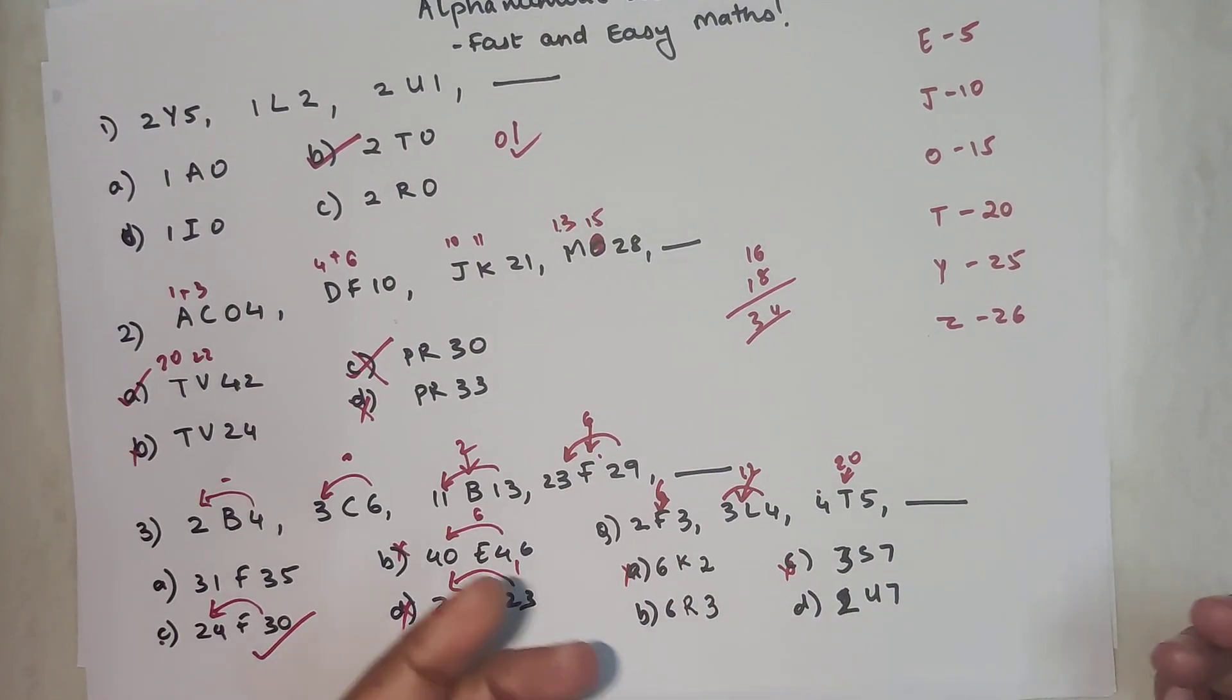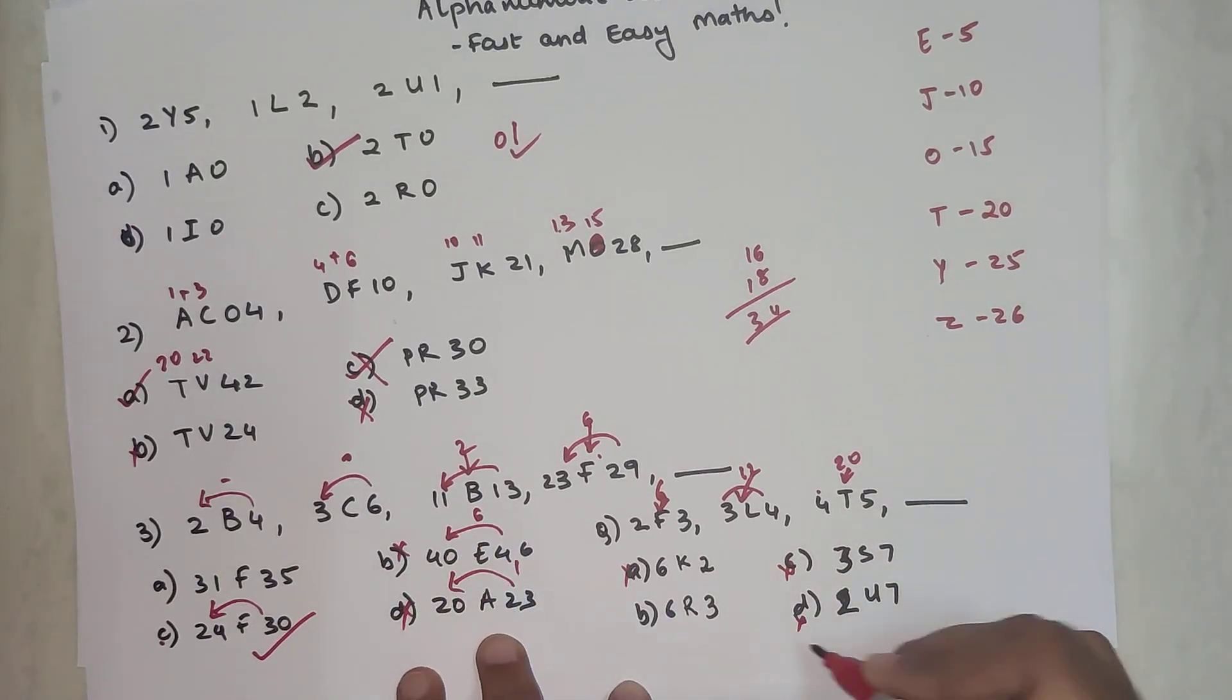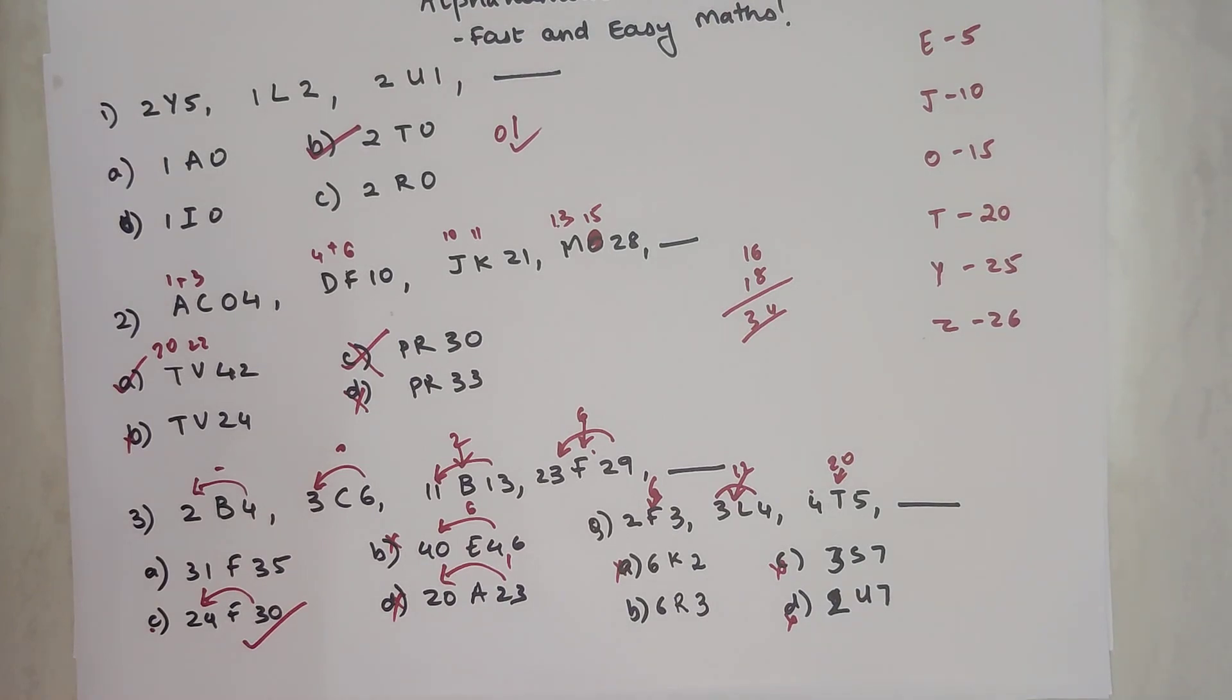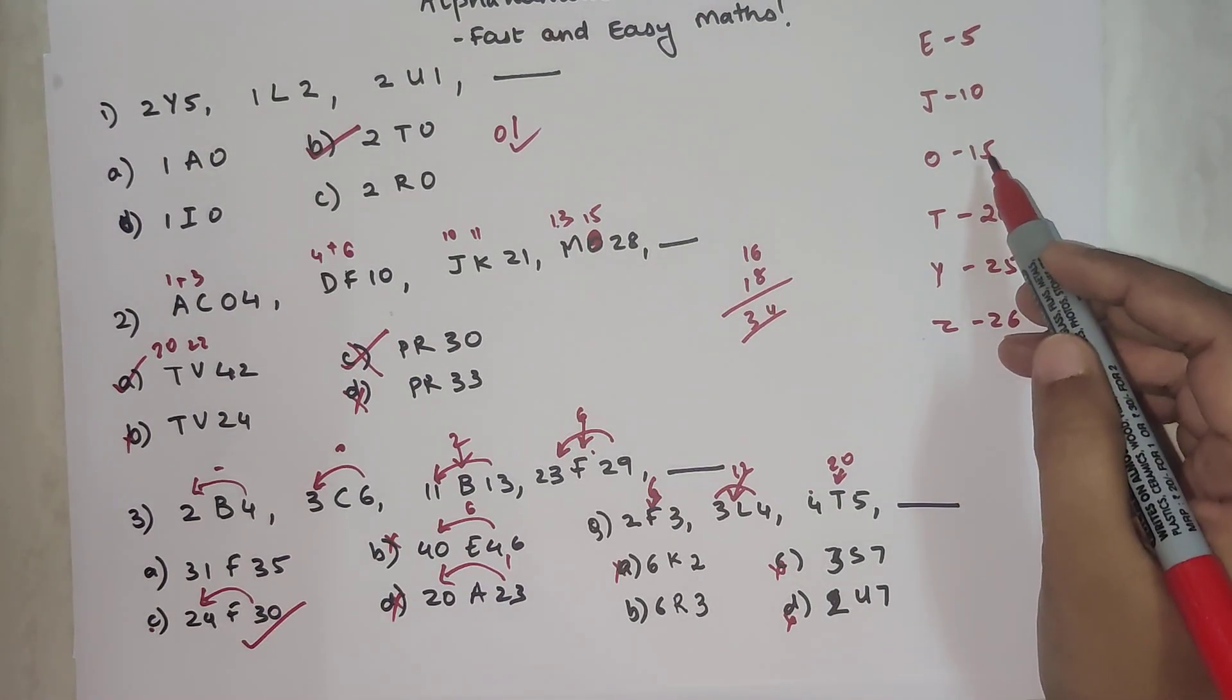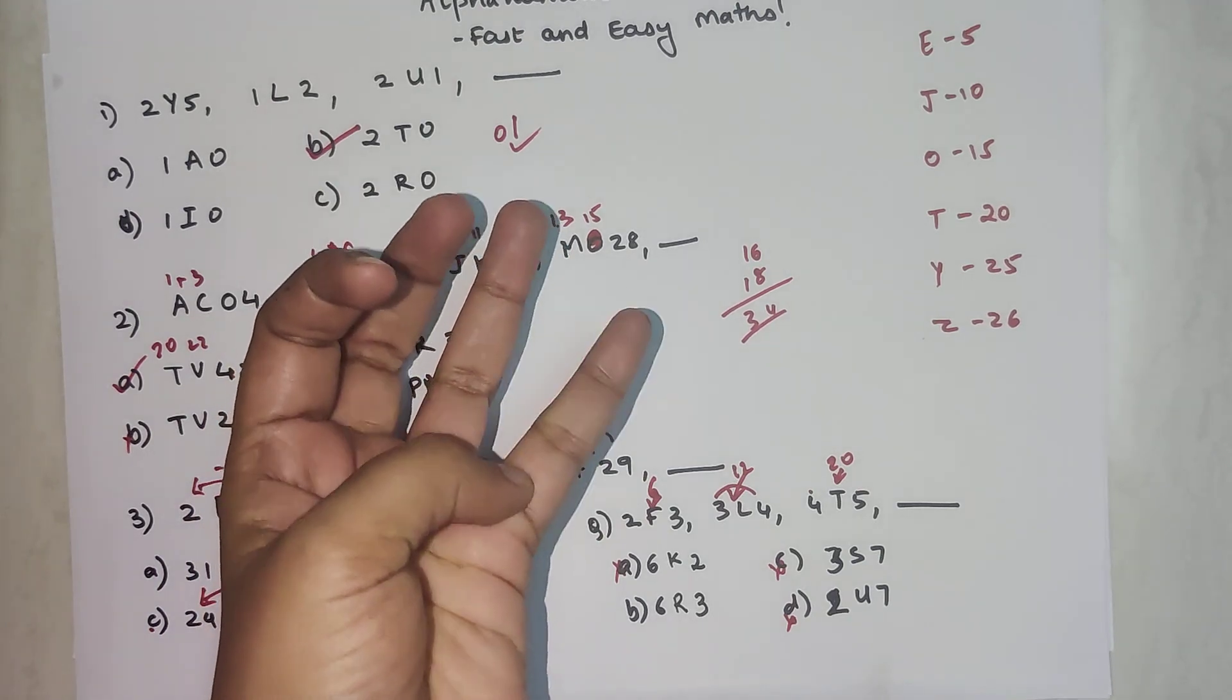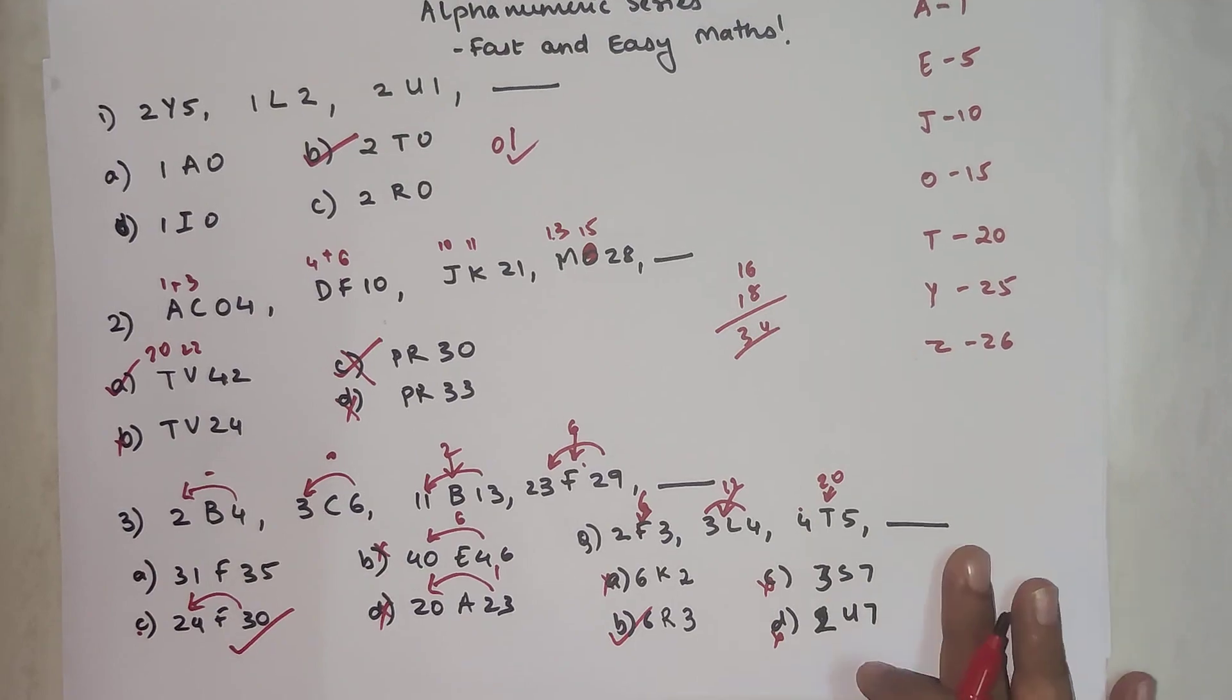Similarly, five times six gets you thirty. We know that O is fifteen, so sixteen is P, seventeen is Q, and R is eighteen. So that is your answer.